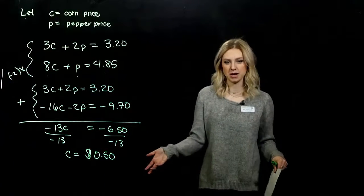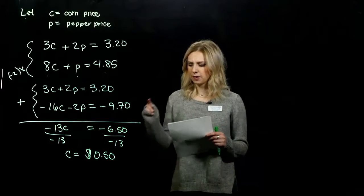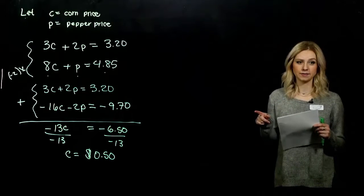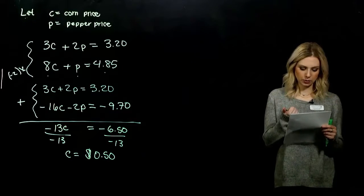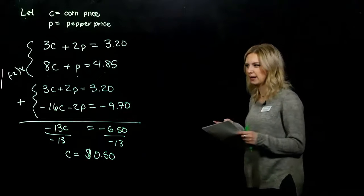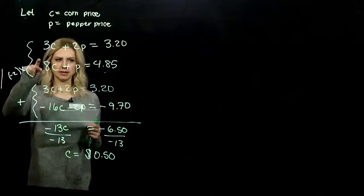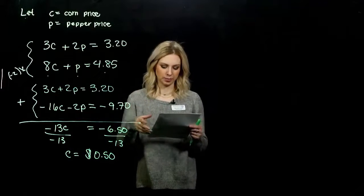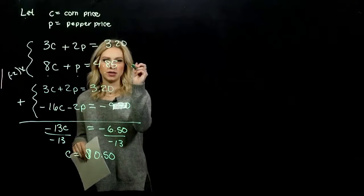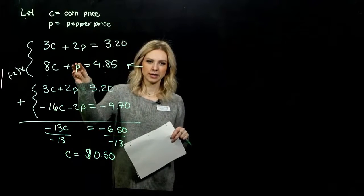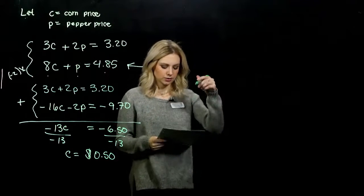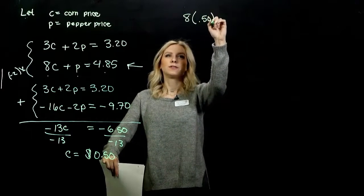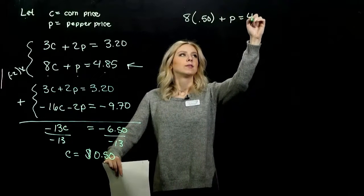Makes sense that it's positive. We're talking about money. So we figured out one piece. One ear of corn is 50 cents, but we are asked to figure out the price of one ear of corn and one sweet pepper. So how do we go back and solve for P? We can plug it into any of these that we want. I'm going to plug it into the second equation because P only has one unit there.